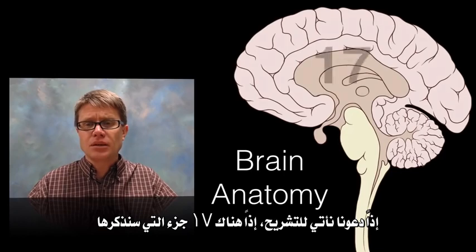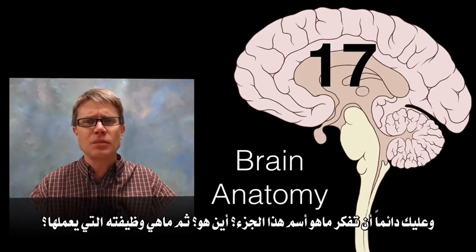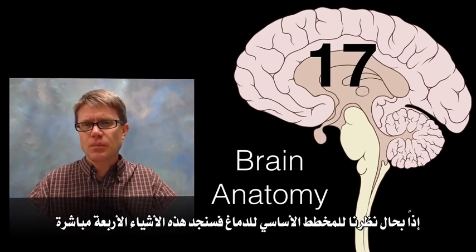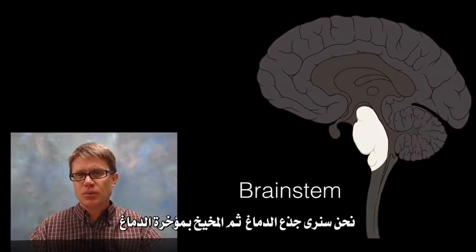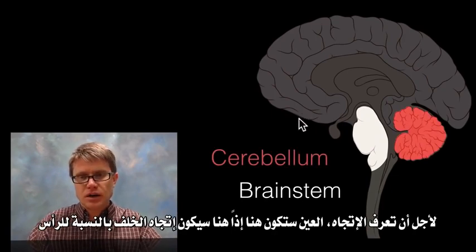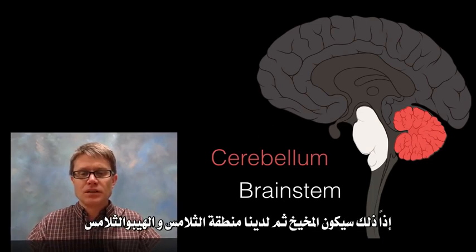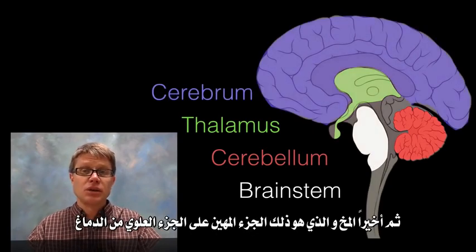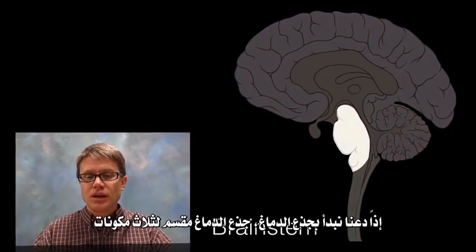Now let's get to the actual anatomy. There are 17 parts to go through — always think: what's the name, where is it, and what's the function? Looking at a basic brain plan, four things stand out right away: the brain stem, the cerebellum on the back, the area of the thalamus and hypothalamus, and then the cerebrum — the dominant upper portion of the brain.